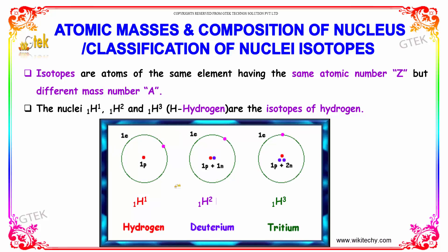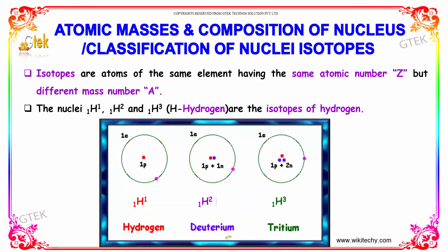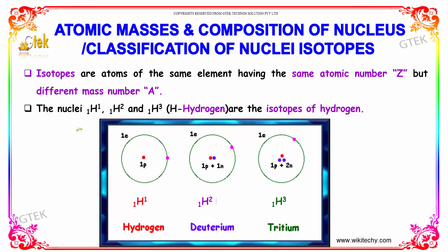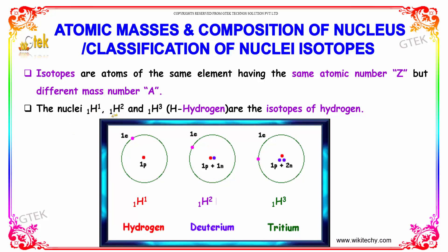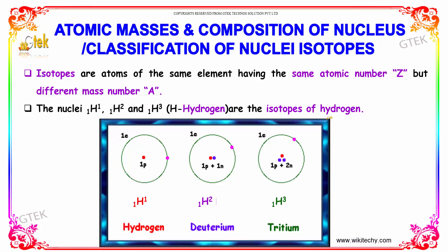You are able to see that the atomic number is the same for hydrogen, but the mass number is different. That's why the names are different: hydrogen, deuterium, and tritium. The nuclei with notation 1,1 and 2,1 and 3,1 are the isotopes of hydrogen.